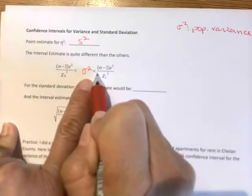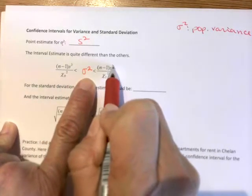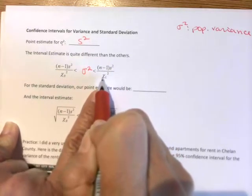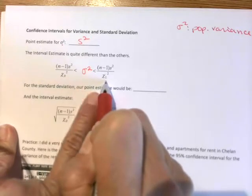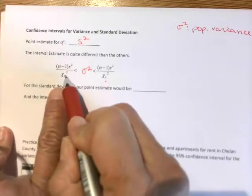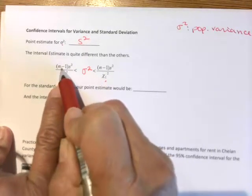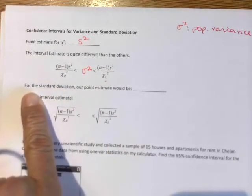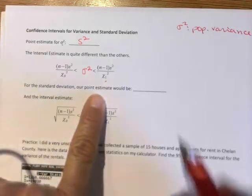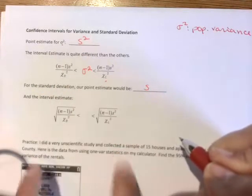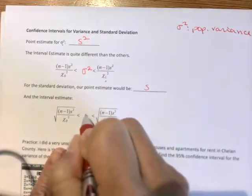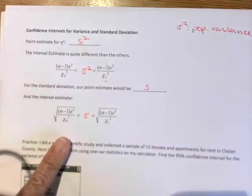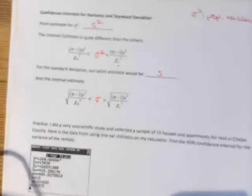So we're estimating the population variance, so it is between n-1 times s-squared, the variance for our sample, divided by chi-square right. And then for the left side of our inequality, it's n-1 s-squared over chi-square left. Notice the chi-square left is actually on the right side, that's why it's important to keep your labels. And then if we happen to be doing standard deviation, our point estimate would simply be s instead of s-squared. And then the interval estimate, we just simply take the square root of the variance all the way around.